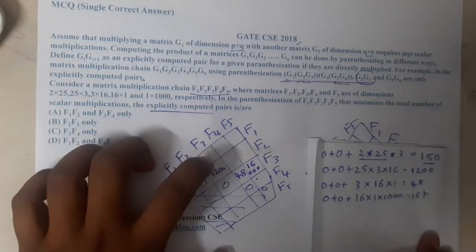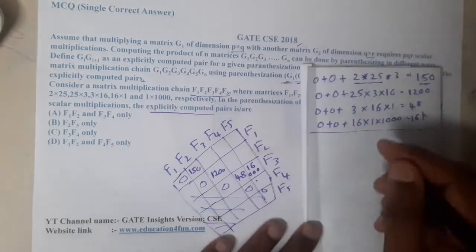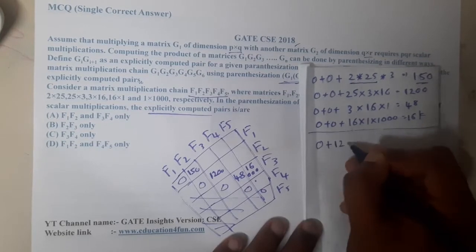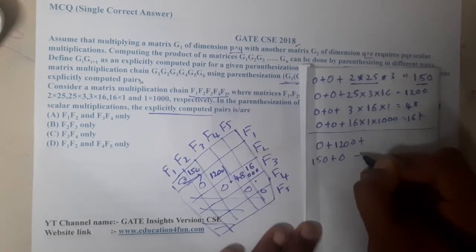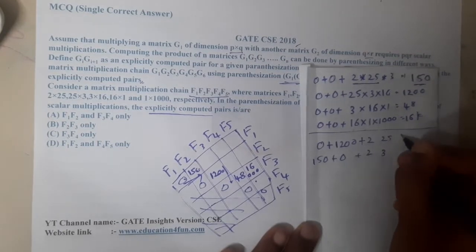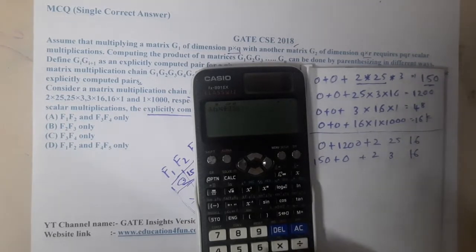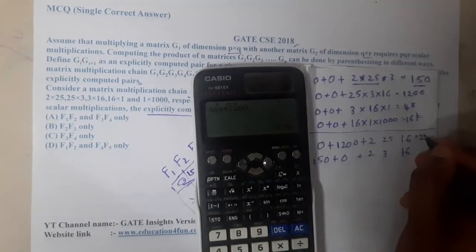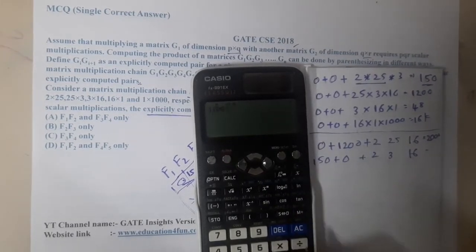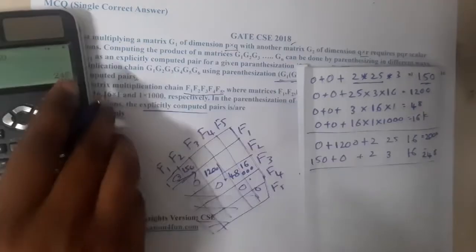Now calculating the next layer. For f1 to f3, we take the minimum of two options using the staircase method. Option 1: 16×25×2 + 1200 = 800 + 1200 = 2000. Option 2: 16×3×2 + 150 = 96 + 150 = 246. The minimum is 246, so the value here is 246.